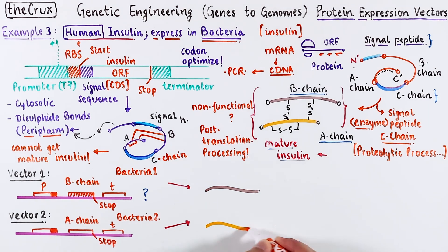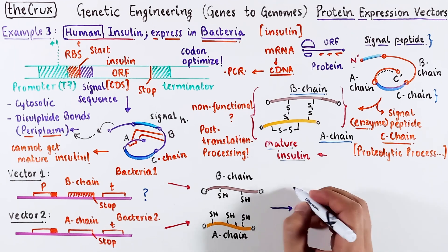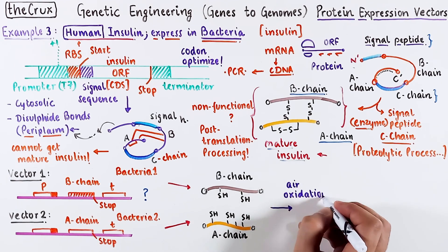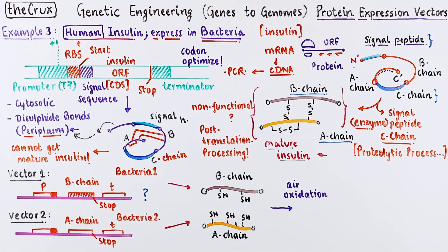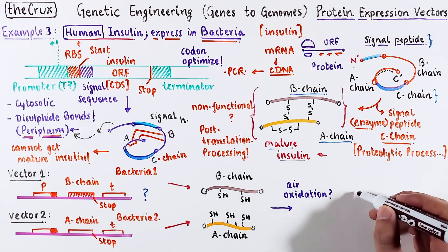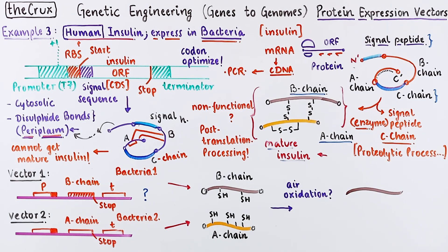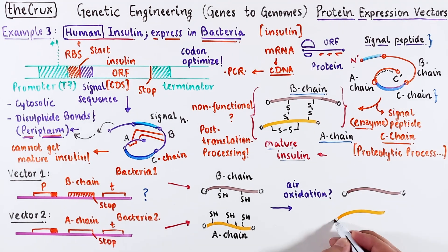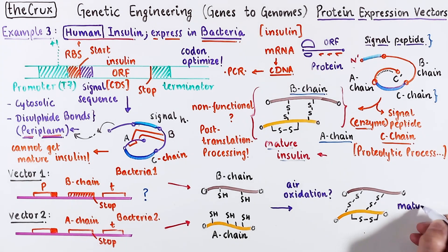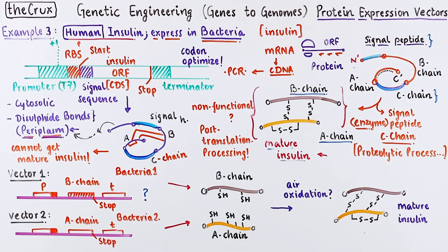From these two bacteria, you independently recover A and B chains. Then you combine the two chains and perform a chemical step called air oxidation. Remember, in bacteria, the oxidative environment of periplasm helps to make disulfide bonds. The air oxidation mimics those conditions. As a result, the A and B chains will come together to form the insulin. Today, the double-vector style is replaced with more efficient methods, but it shows that protein expression systems can also be modular.